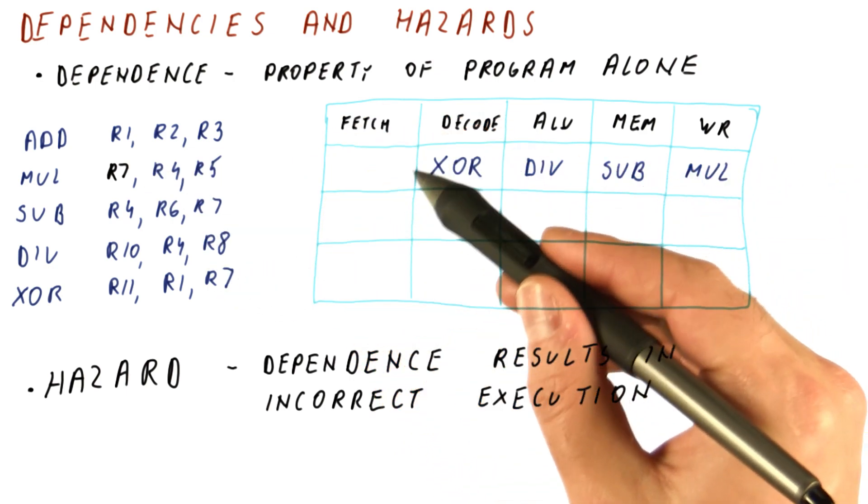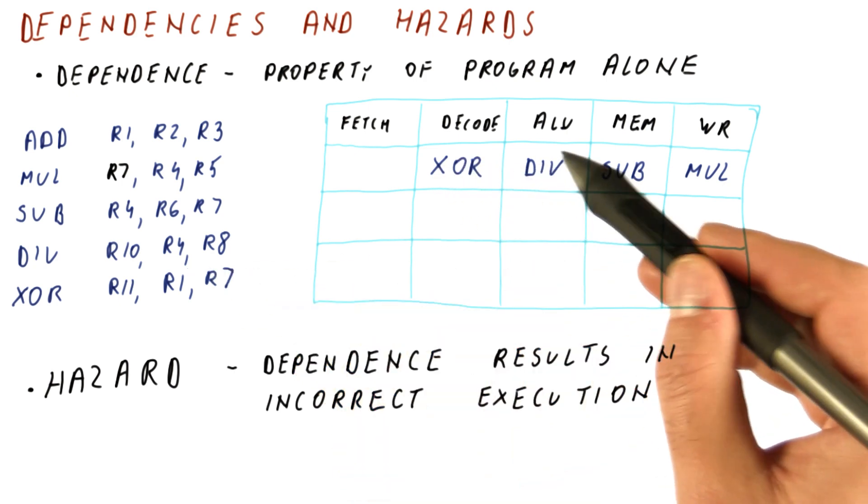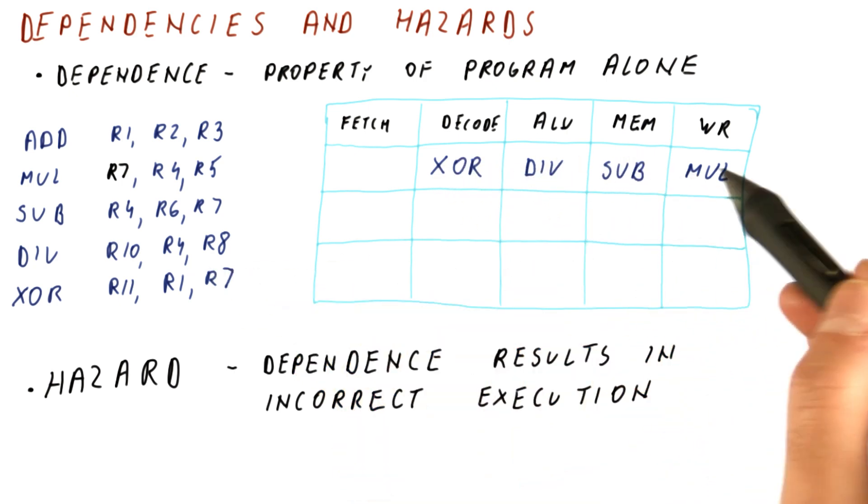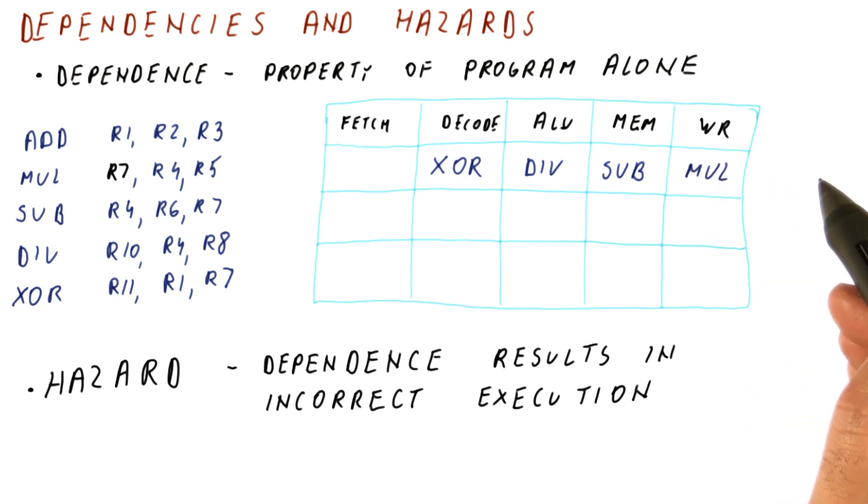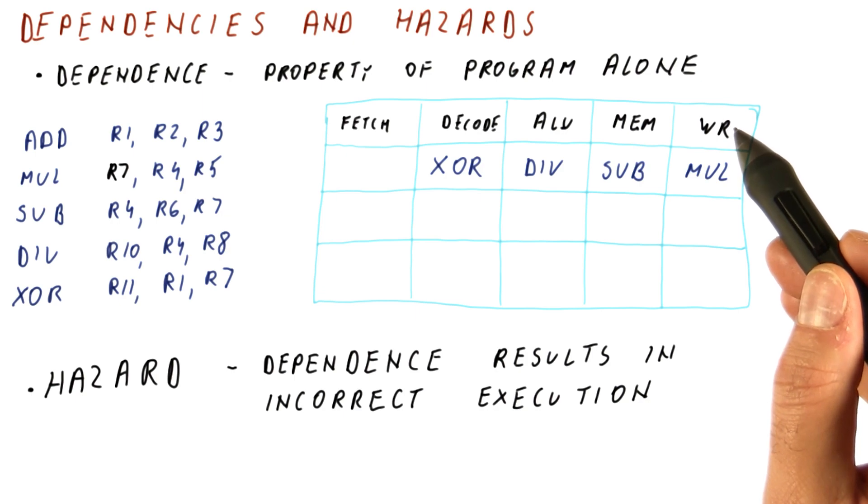When the XOR is in the decode stage, the divide is in the ALU stage, the subtract is in the mem stage, and the multiply is in the write stage, and the add has left the pipeline. It was writing to R1 in the previous cycle.